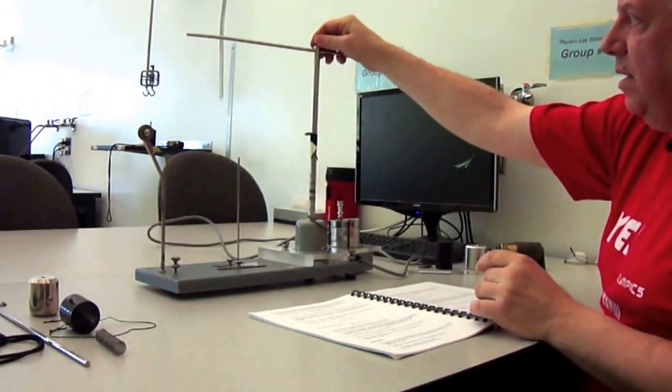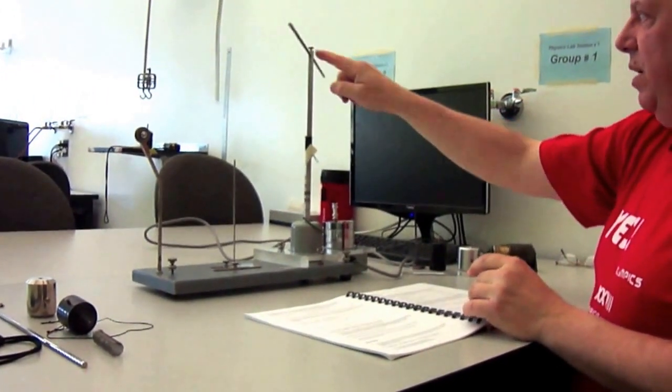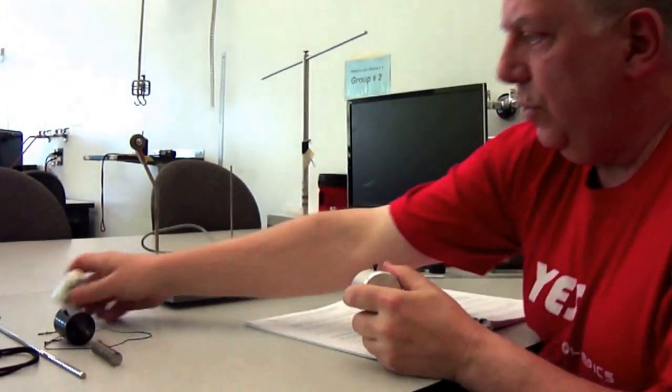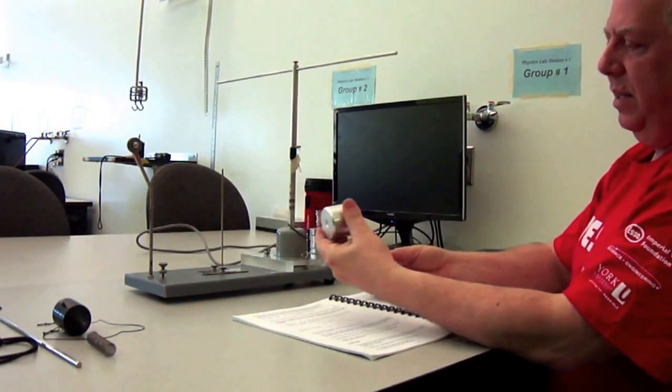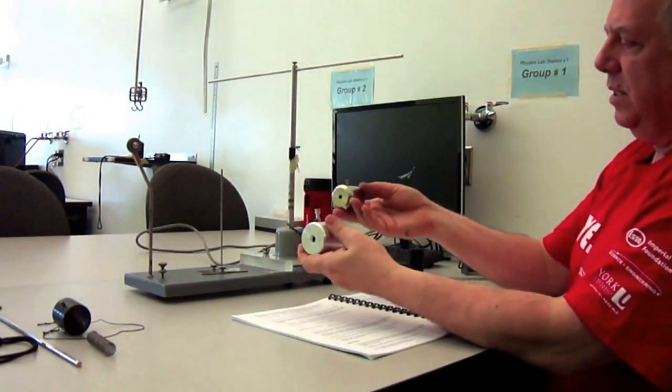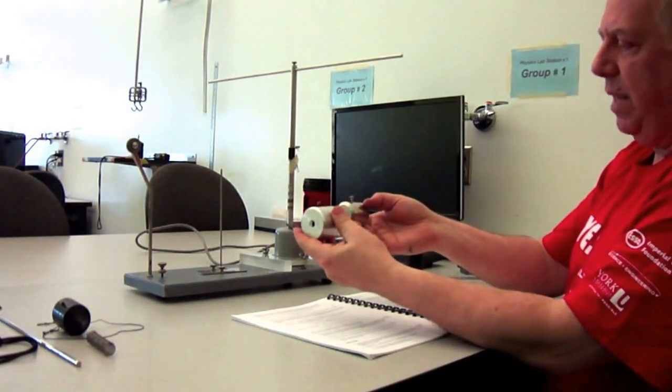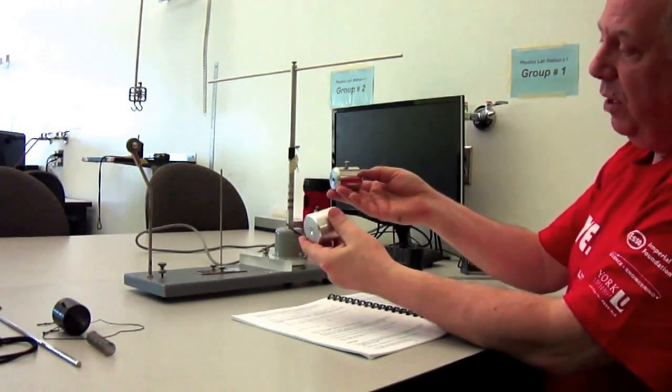Then we take two masses. This is an aluminum mass. This is, I guess, a chrome plated brass mass that's described in the manual. This is smaller in size but much much heavier. This is much much lighter.